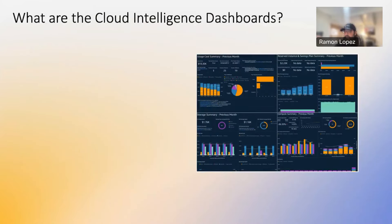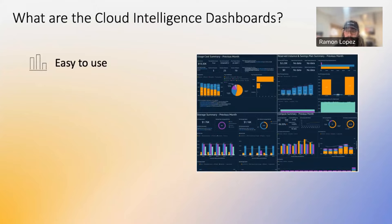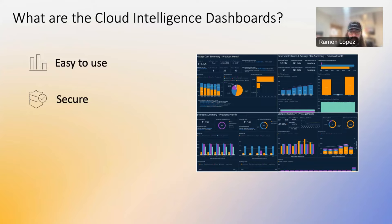Our team has built this package called CUDOS — the Cloud Intelligence Dashboard. It's a bundle of configurations deployed via a CloudFormation stack, or multiple stacks if you have multiple accounts. It's easy to use and easy to deploy — with one account, it can take you 20 to 30 minutes. It's secure, leverages core AWS services, and everything stays within the organization's ecosystem, abiding by AWS security standards.